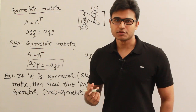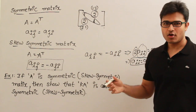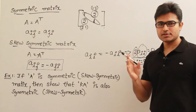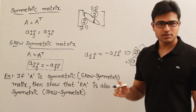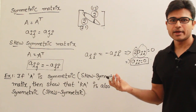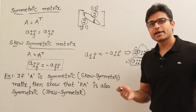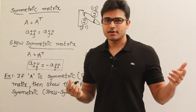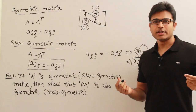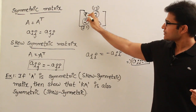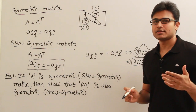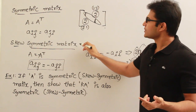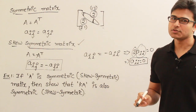Otherwise, a matrix cannot be skew-symmetric. If some matrix has to be skew-symmetric, you are saying that after transposing and multiplying by minus 1, both matrices have to be the same. After transposing, the principal diagonal elements remain the same, and multiplying by minus 1 means the original diagonal elements must equal their own negatives — which is only possible if they are 0. So in a skew-symmetric matrix, the principal diagonal elements are always 0. This is a very important point and has been asked in GATE.